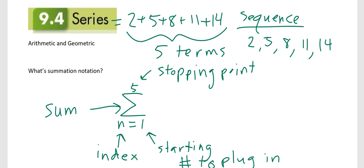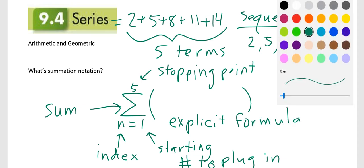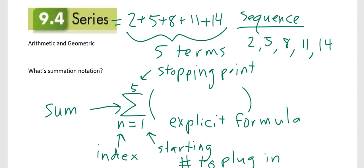Now, next to that is going to be some sort of explicit formula. Now, for this particular function, 2, 5, 8, 11, 14, that's arithmetic.